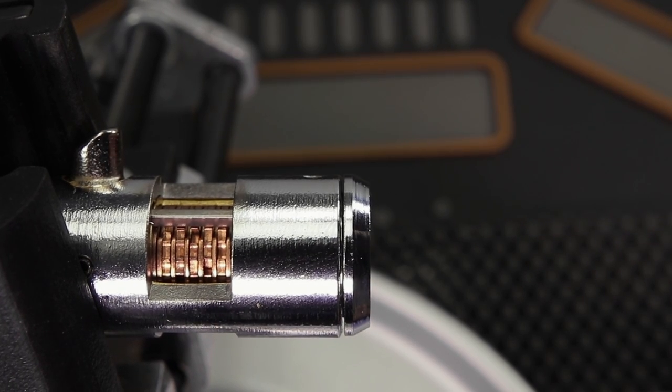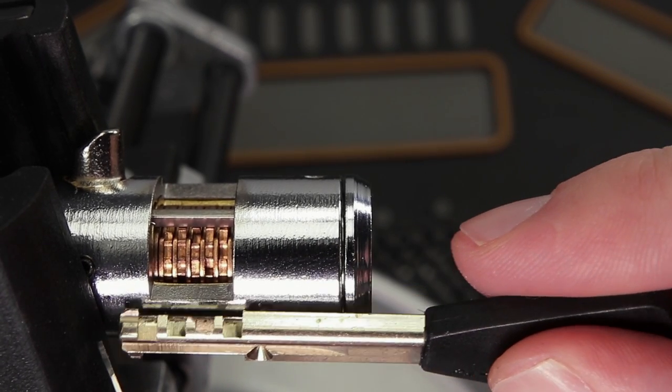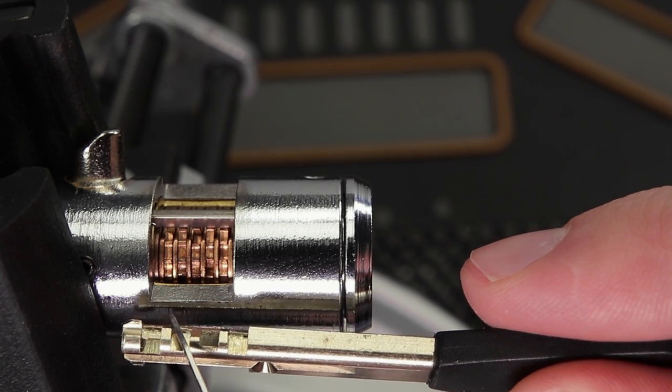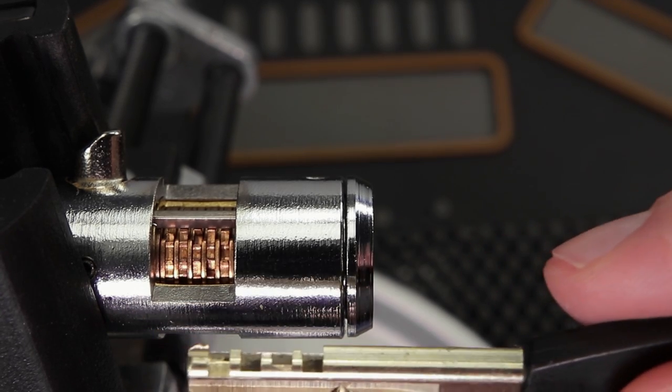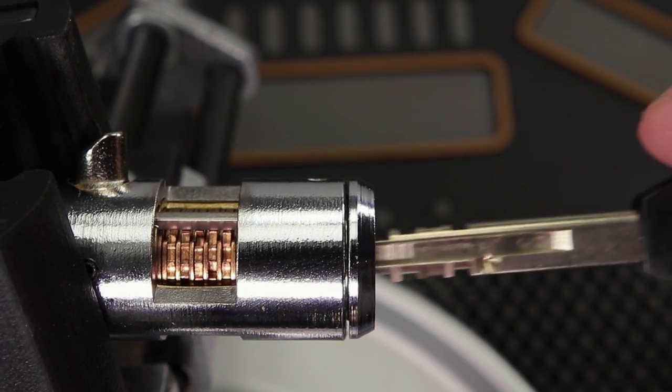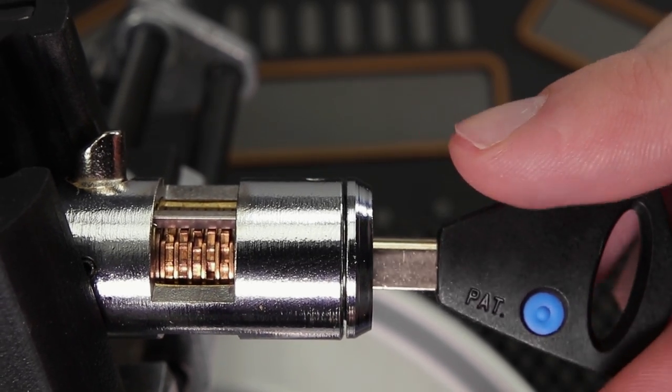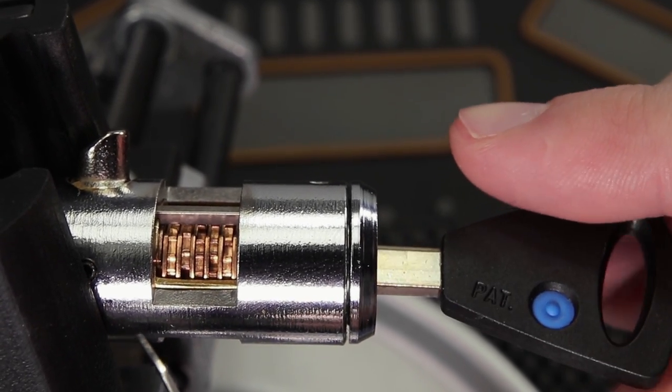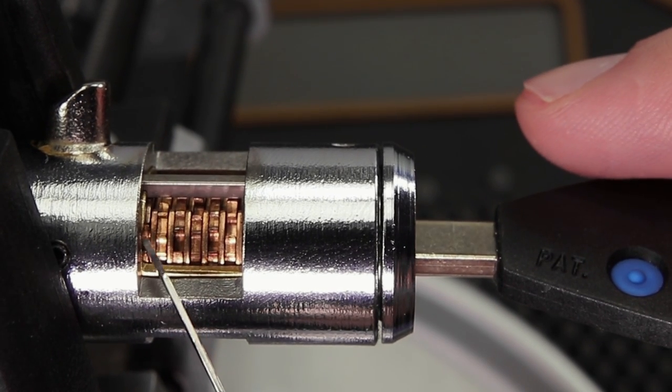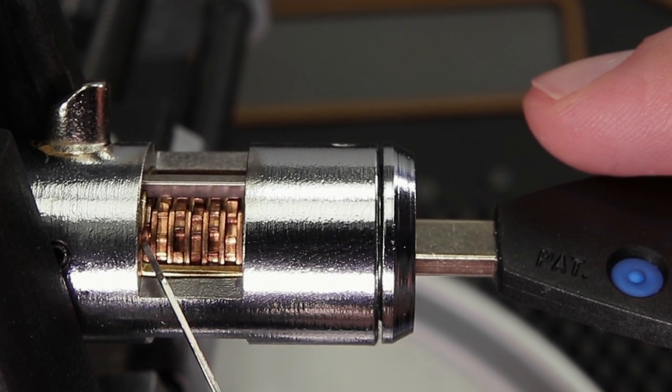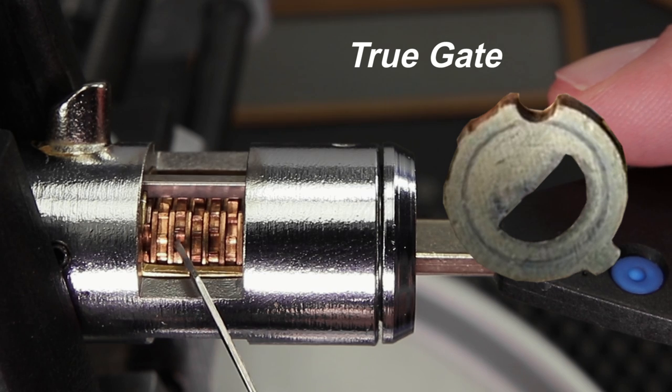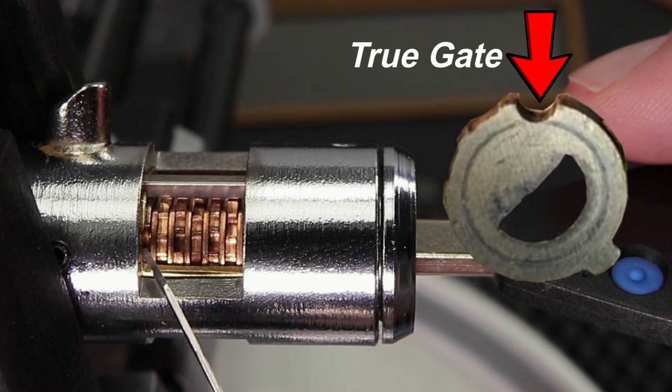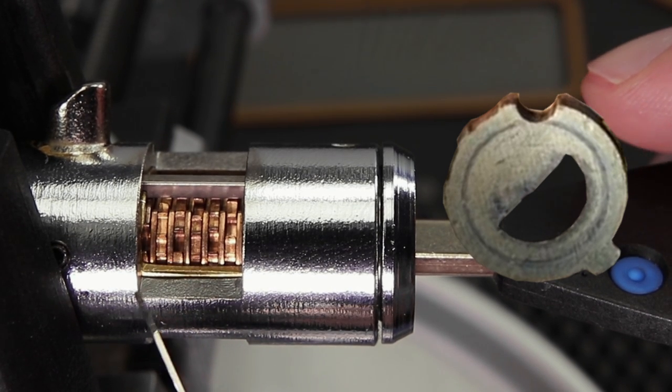When you take a look at the key here you see that it has different cutouts which allow the disc to only rotate to a certain amount. Once you insert the correct key the discs start to turn. As you can see right here and here, these deeper cutouts are the true gates which need to all align going across to get your lock opened up.